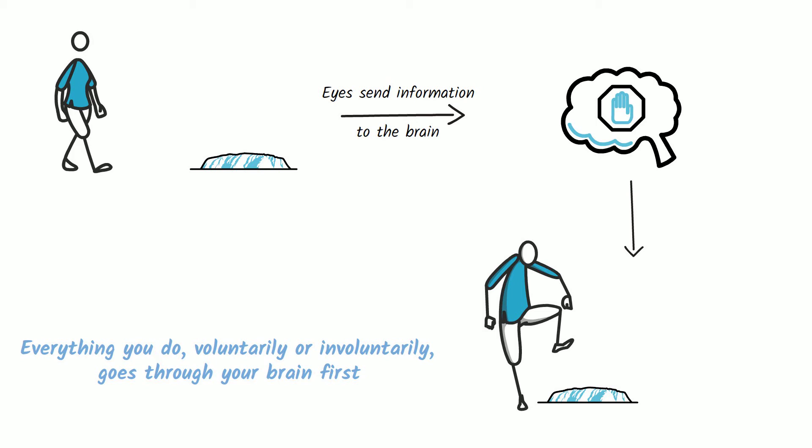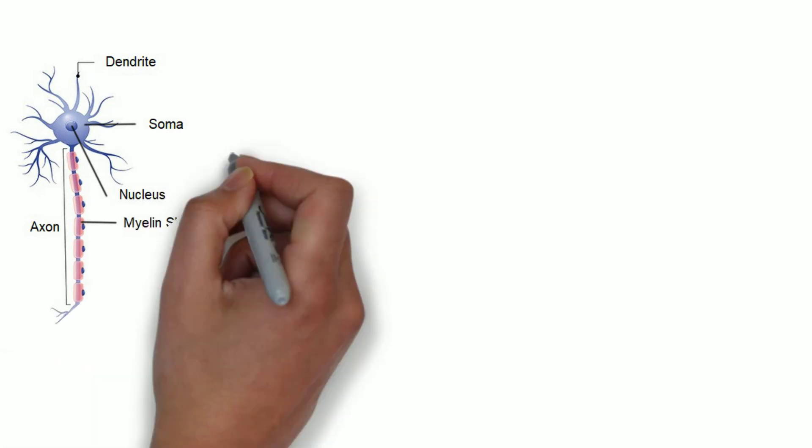Today we are going to focus on the nerve cells that compose the majority of brain matter. Let's first have a look at what they look like, as they look quite different to other cells that we have talked about before.